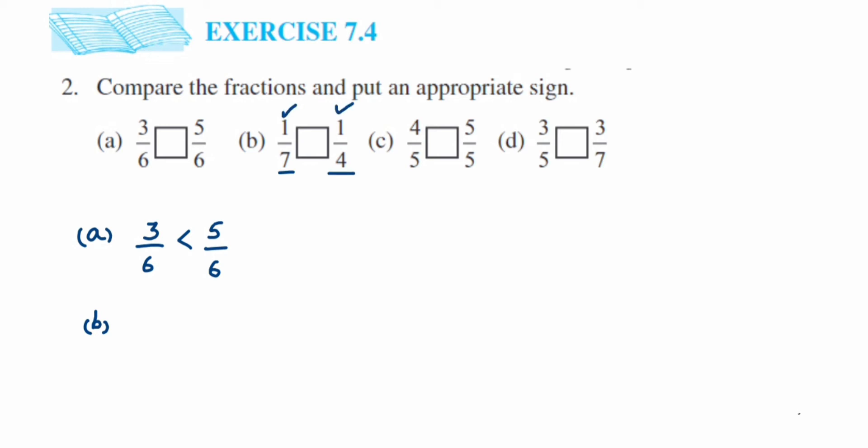In unlike fractions when numerators are same and denominators are different, greater the denominator, smaller will be the number. Or smaller the number, greater will be the fraction. So here 7 is greater than 4, so we can say 1 by 4 is greater than 1 by 7. It's like the opposite of like fractions.